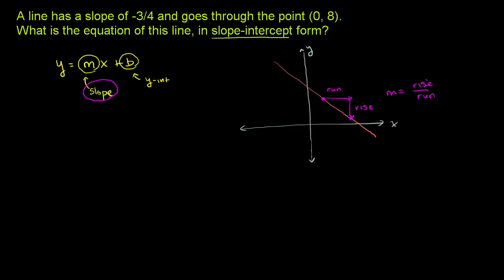The y-intercept just tells us where we intercept the y-axis. So the y-intercept, this point right over here, this is where the line intersects with the y-axis. This will be the point 0 comma b.